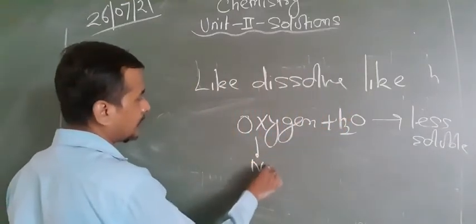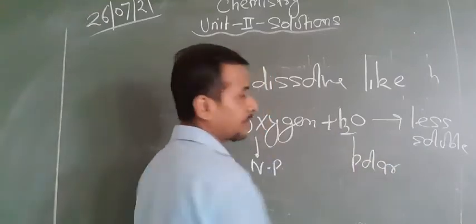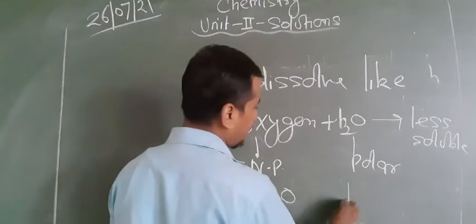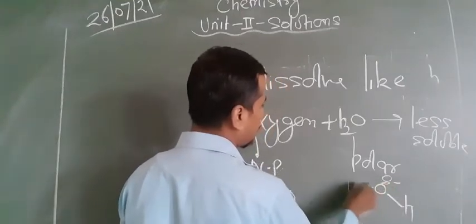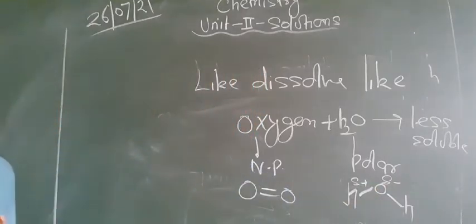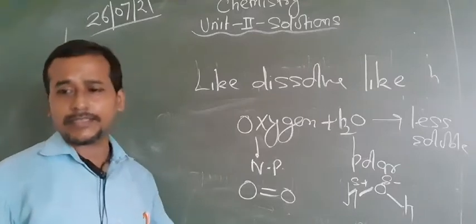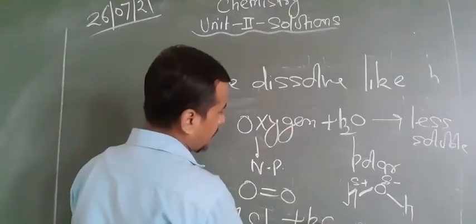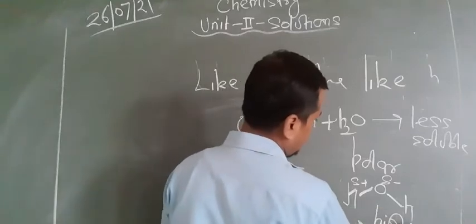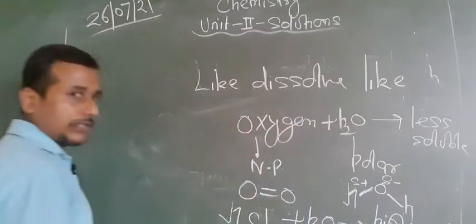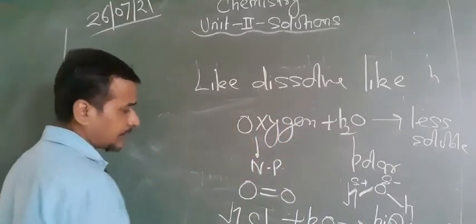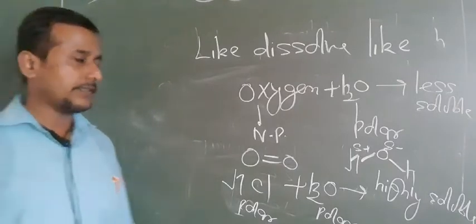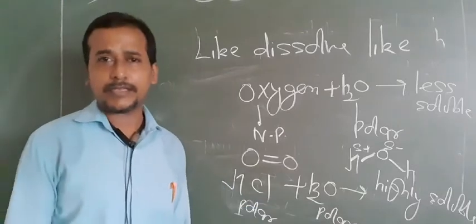Oxygen atoms are bonded with each other, so no polarity develops. But water has H bonded with a highly electronegative atom, which develops polarity — so water is polar. That's why oxygen is less soluble in water. However, if we take HCl and dissolve it in water, it is highly soluble, because HCl is also polar and water is polar — dipole-dipole interactions. The nature of the forces is similar, so they dissolve in each other.